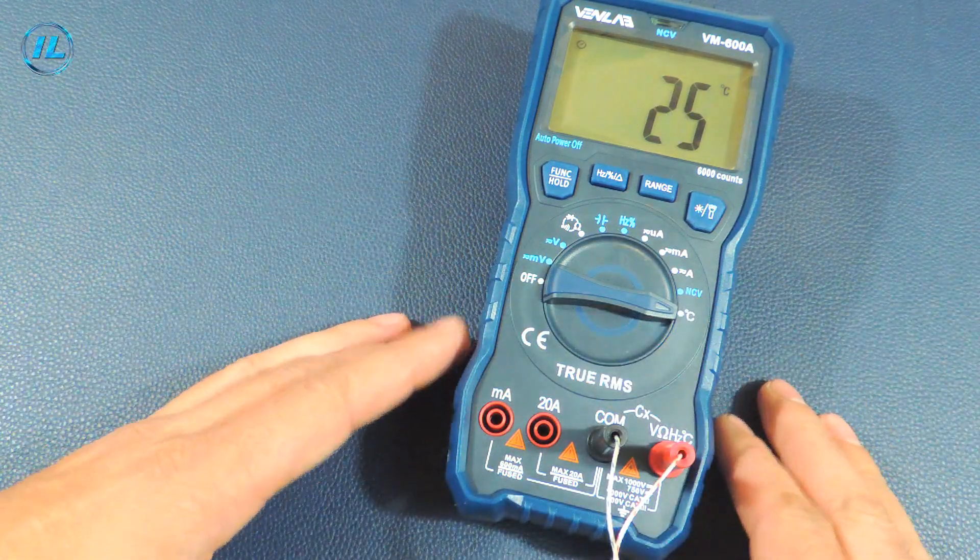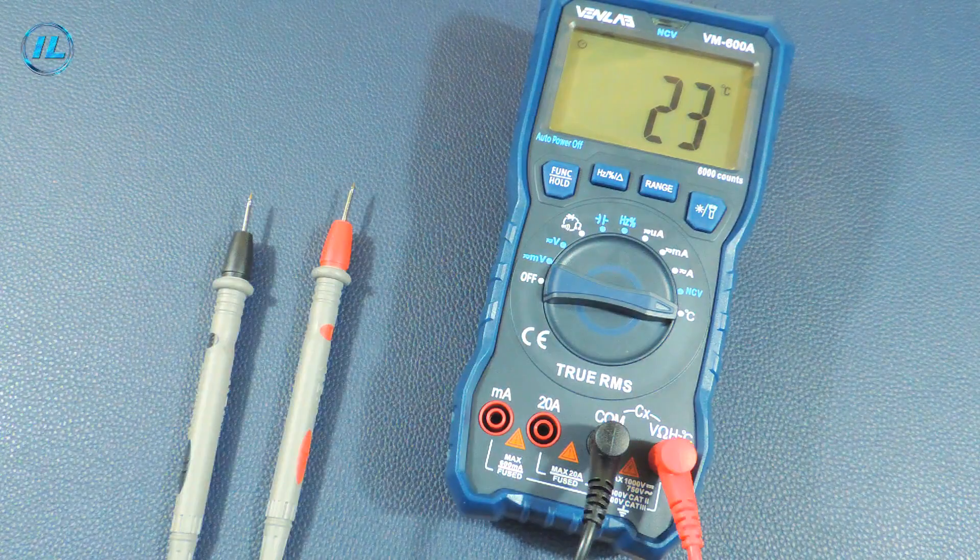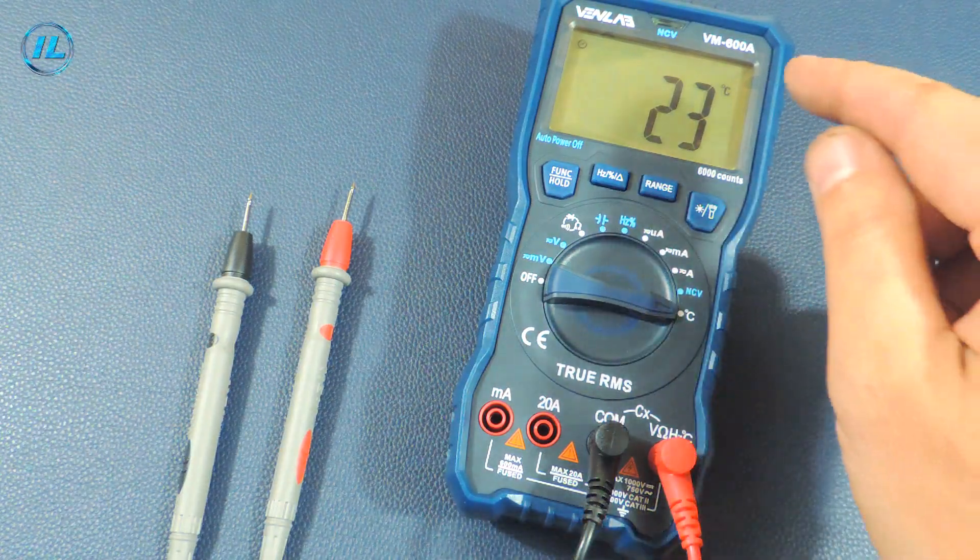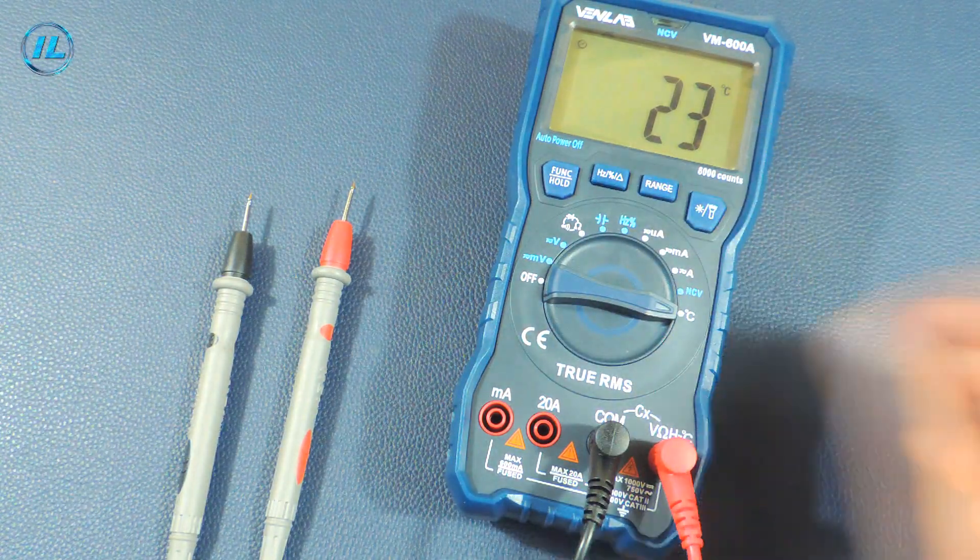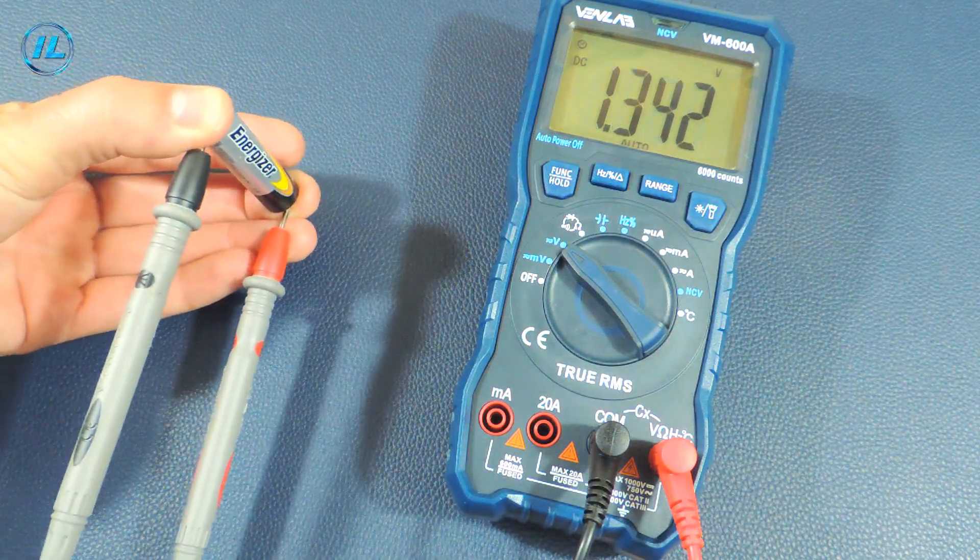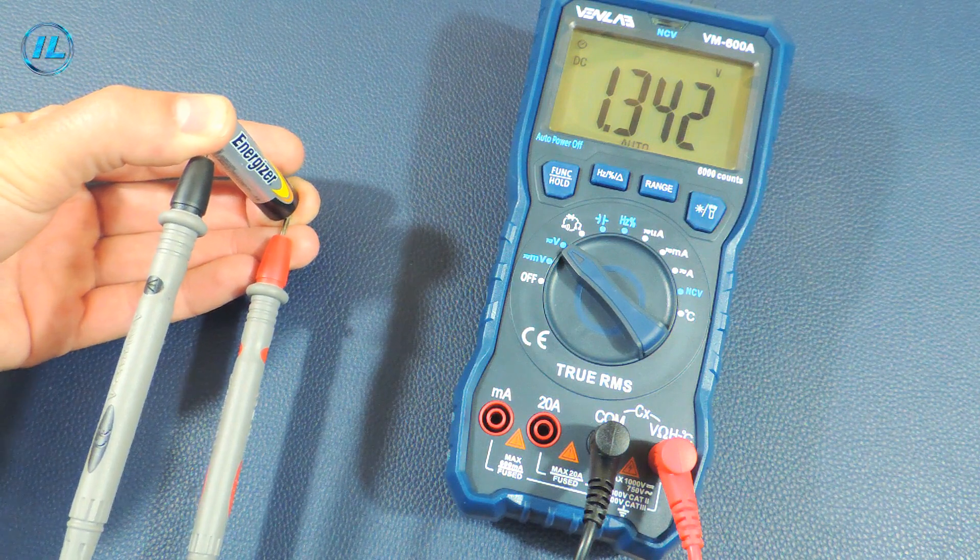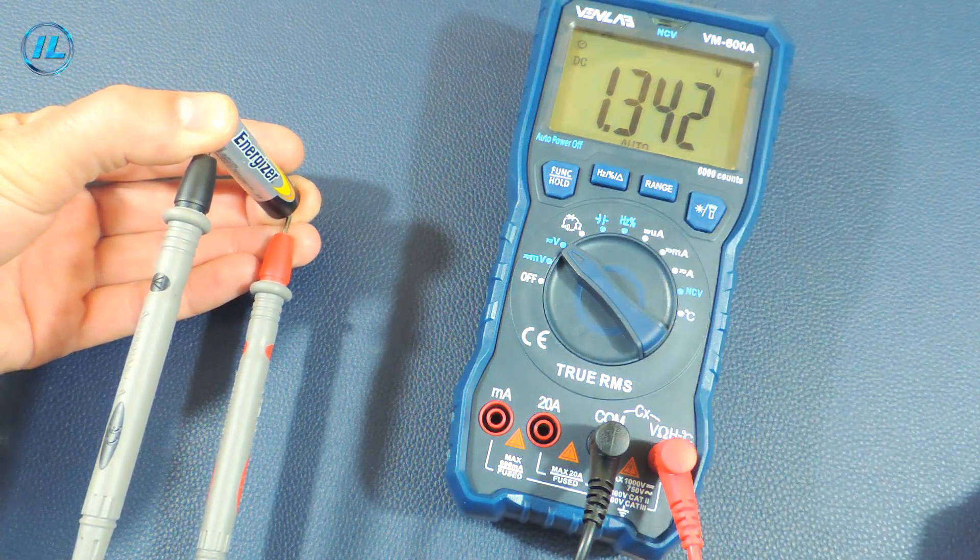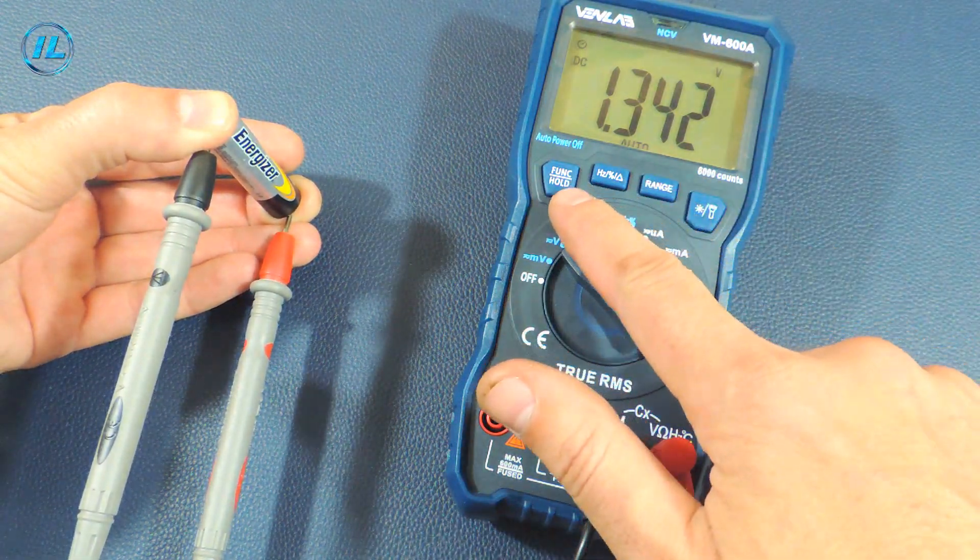And this multimeter mode works without problems. Also this multimeter can record the measurement value on the screen. For example, the voltage of this battery is 1.34 volts. To fix this value you need to press and hold the hold button.